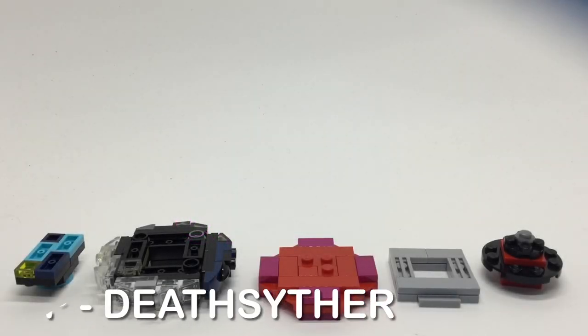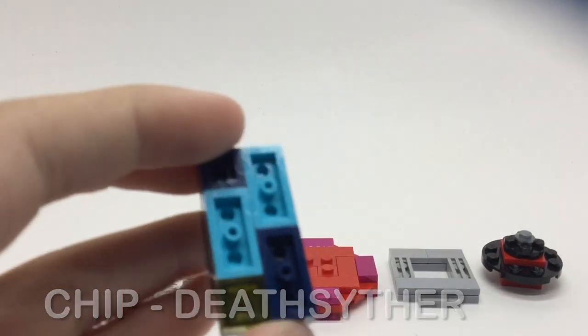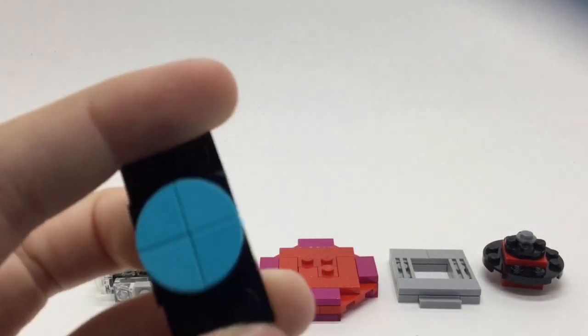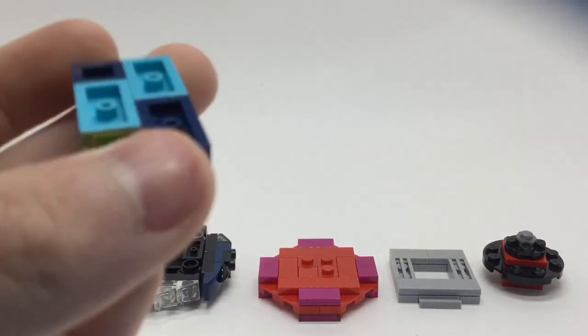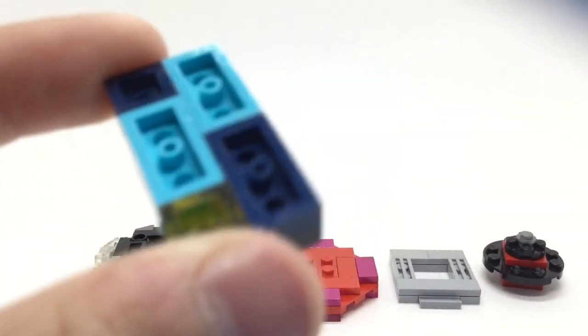Here are the parts of the Beyblade. Starting with the chip, we have the brand new Death Scyther sparking chip and core. The core is fused, I'm not sure if it actually is, but that's what I've done with it. Pretty nice color scheme.